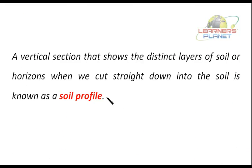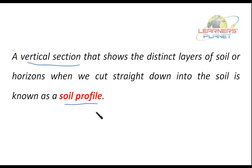A vertical section that shows the distinct layers of soil or horizons, when we cut straight down into the soil, is known as soil profile. It is made up of distinct horizontal layers called horizons, and a vertical section which shows these distinct layers is known as a soil profile. Let us see which horizons are there in a soil profile.